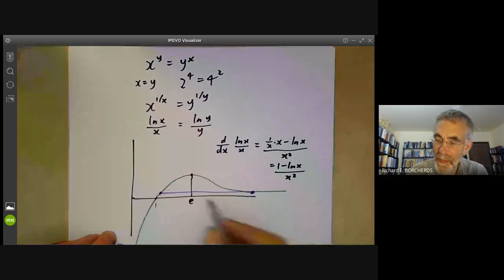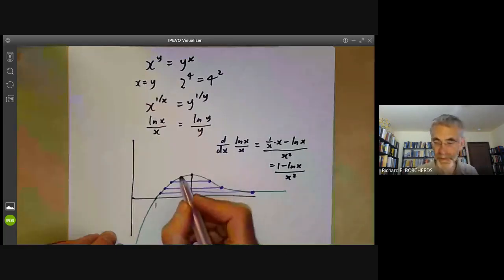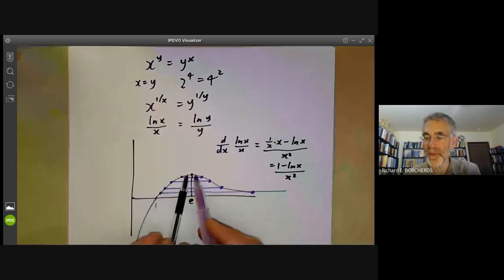And then if we make x a bit bigger, we find y is there. And if x is a bit bigger, y is there and so on. So we can see that as x increases from one to infinity, the value of y decreases from infinity to one. And they cross over at this point here, where x and y are both e.